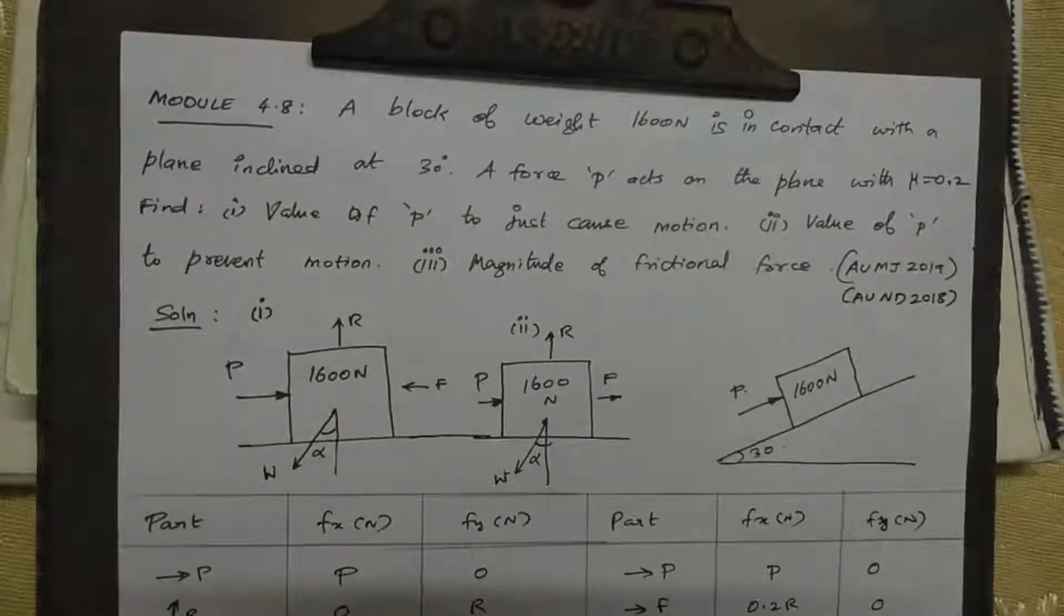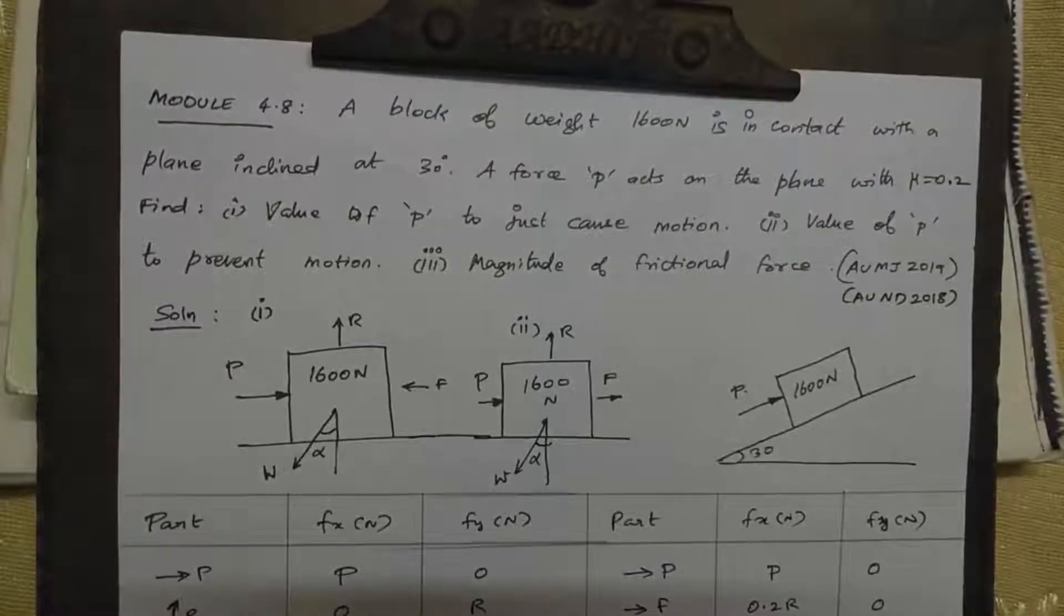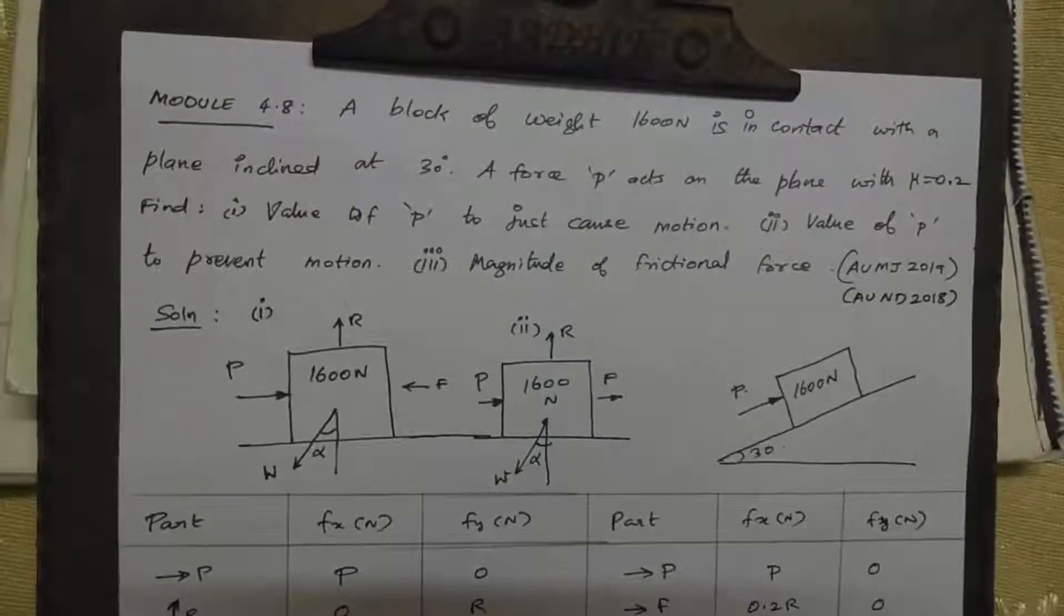This is model number 4.8. A block of weight 1600 Newton is in contact with a plane inclined at 30 degrees. A force capital P acting on the plane with coefficient of friction 0.2.